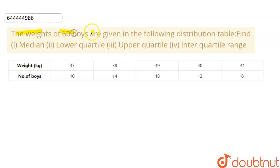The weights of 60 boys are given in the following distribution table. Find: first part, median; second is lower quartile; third is upper quartile; and fourth is interquartile range.